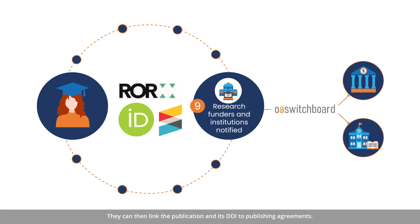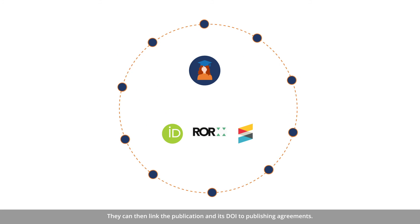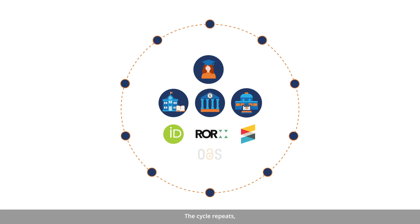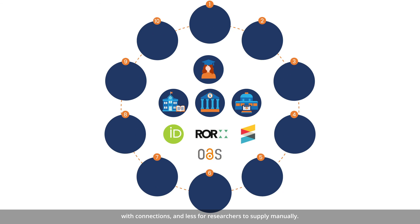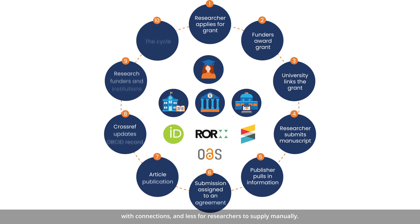They can then link the publication and its DOI to publishing agreements. The cycle repeats, but now there is even more validated, trustworthy information everywhere, with connections, and less for researchers to supply manually.